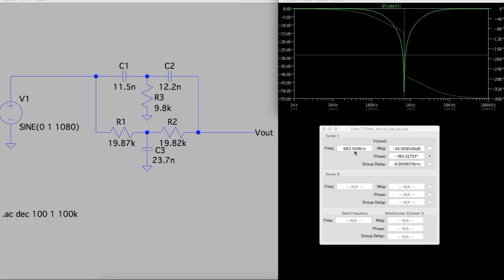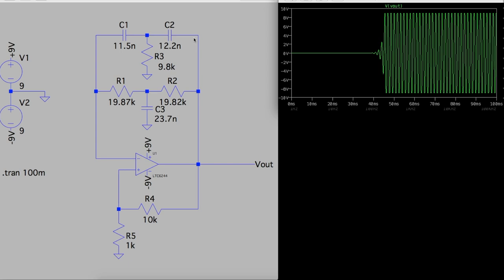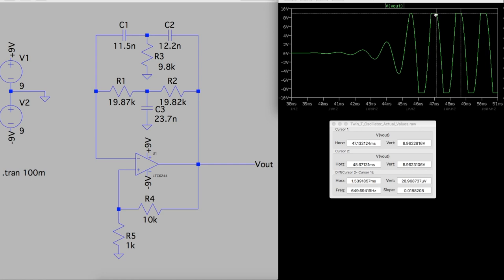the frequency now with these component values is 683 hertz in this ideal simulation, which is kind of close to our 650 or so hertz real world oscillator. And when we simulate the entire oscillator with these actual component values, and we put cursors peak to peak as best we can,